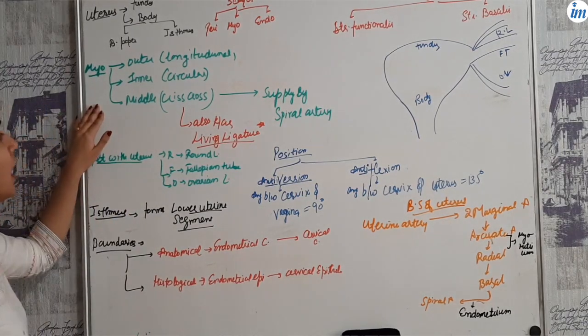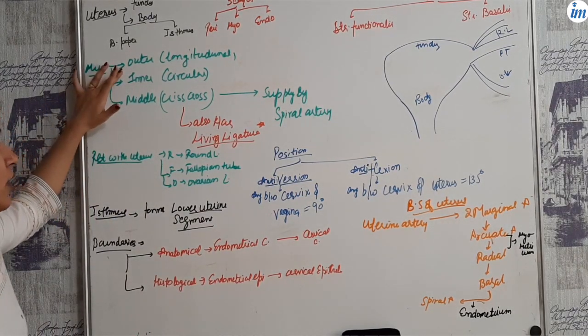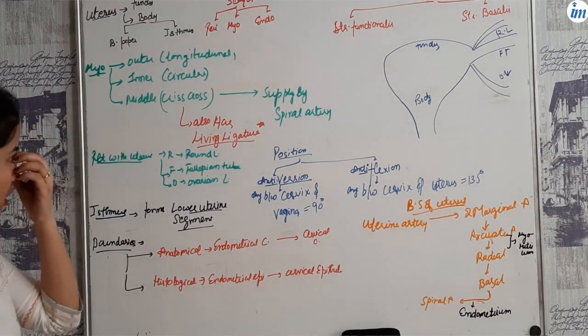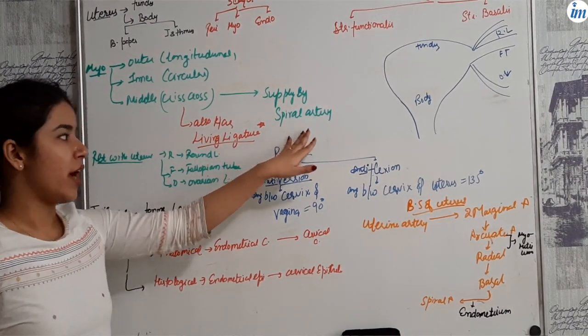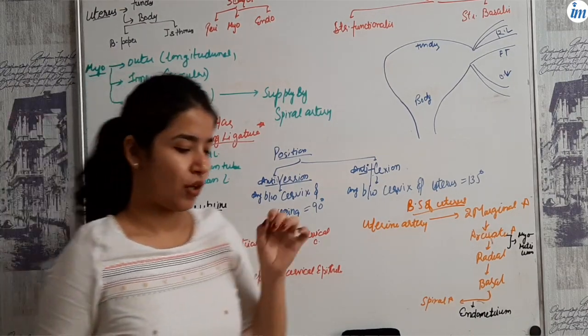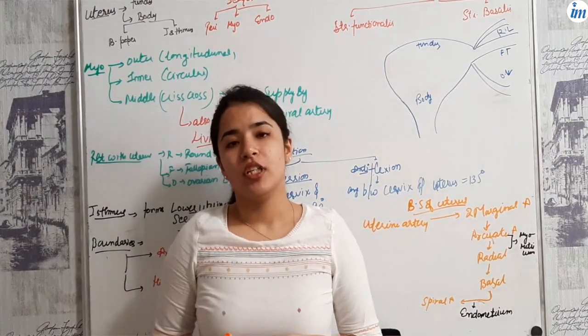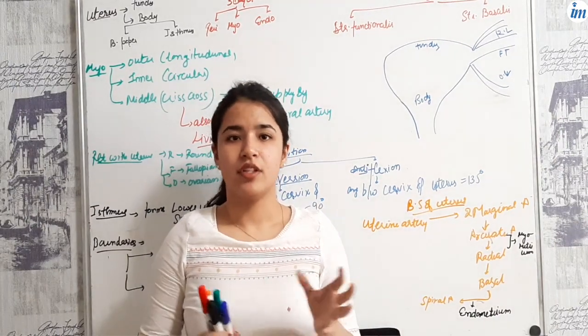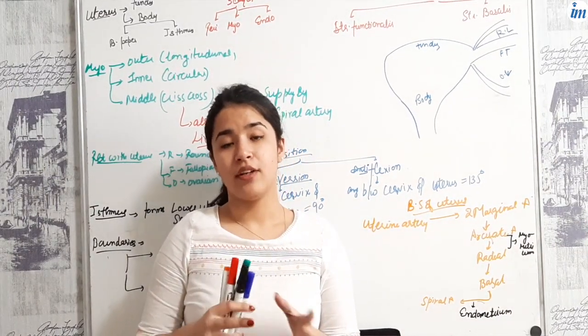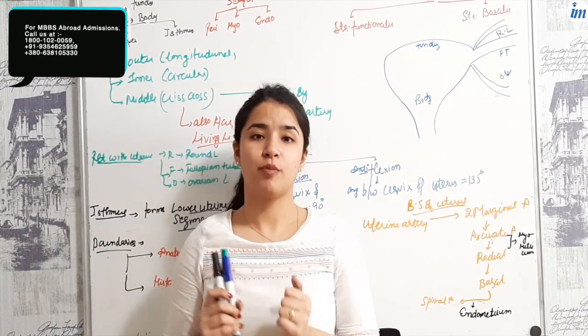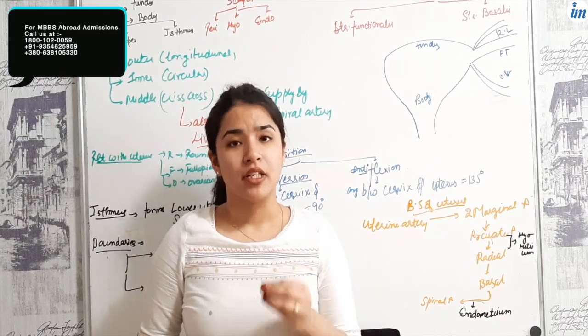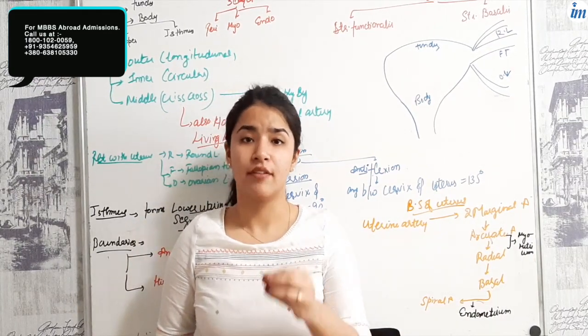The myometrium has three layers: the outer longitudinal, inner circular, and middle crisscross layer. It is supplied by the spiral artery. The crisscross layer, after separation of placenta, will constrict and also leads to constriction of spiral artery, hence the bleeding is stopped. That's why the middle layer is also known as the living ligature, as it helps in controlling the bleeding.